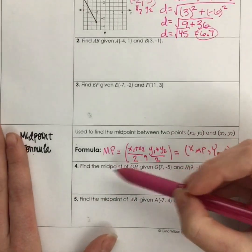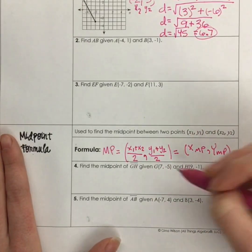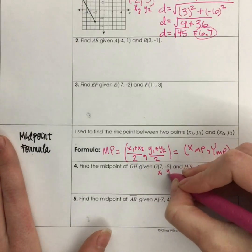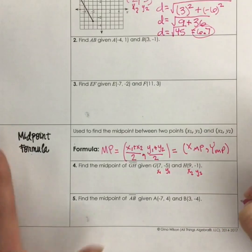So if we want to find the midpoint of the segment GH, we have G, we have H, 7, negative 5, so x₁, y₁, and H is our x₂, y₂, with 9 and negative 1.